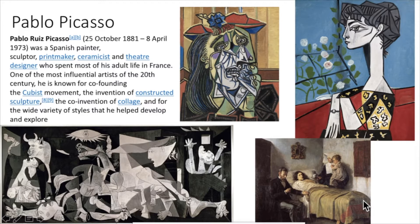This is Pablo Picasso. He was a Spanish sculptor, printmaker, ceramicist, and theater designer who spent most of his adult life in France. He's one of the most influential artists of the 20th century, known for co-founding the Cubist movement. He invented constructed sculpture — where you take different objects and connect them to create a sculpture — and co-invented collage. This is Guernica, one of his most famous paintings. And this other piece, which doesn't really look like typical Picasso, is actually from when he was a very young boy first learning to paint in a more traditional style.